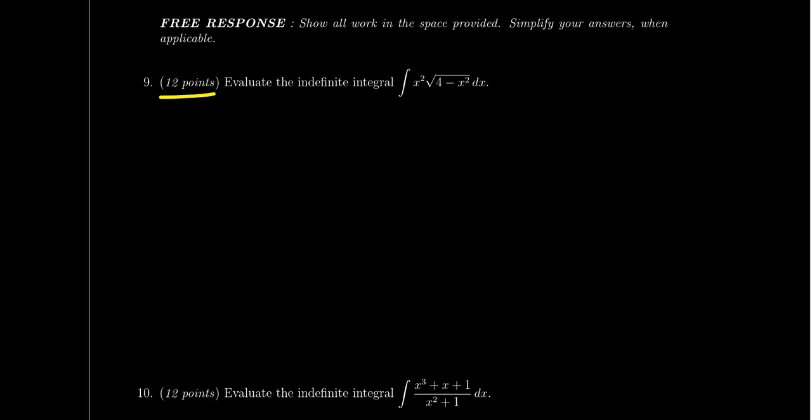The final section of the exam is the free response section — four questions. Their point values change based on perceived difficulty, but most are in the 12-point range. Question nine is a 12-point problem and it will ask you to evaluate an indefinite integral. You are allowed to use any technique, but be aware this question was intended to be solved using trigonometric substitution. This is a free response question, so you do need to show your work for full credit.